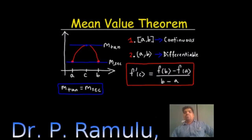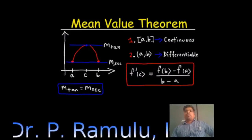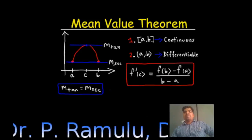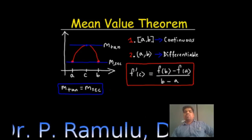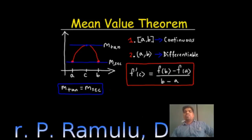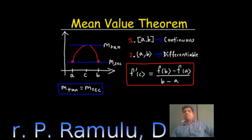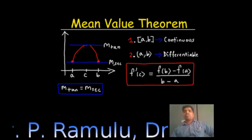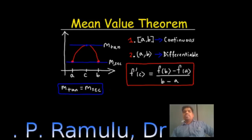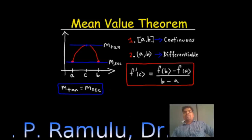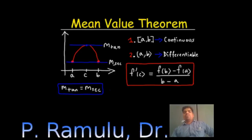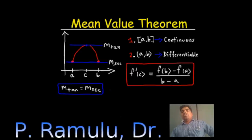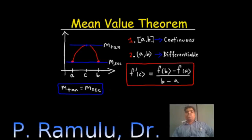Observe here: the function is continuous and differentiable, and there exists a point C such that f'(C) equals [f(b) minus f(a)] divided by [b minus a]. In the Mean Value Theorem, we need not have f(a) equal to f(b). If f(a) does equal f(b), it reduces to Rolle's Theorem.